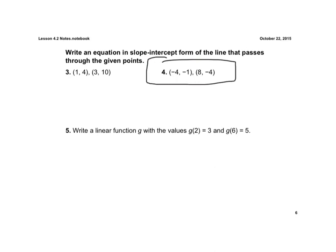And so we have to find the slope. So I'm going to take negative 1 minus negative 4, all over negative 4 minus 8. I keep change change, it gives me positive 3. Keep change change, and I get negative 12, reduces to negative 1 fourth.